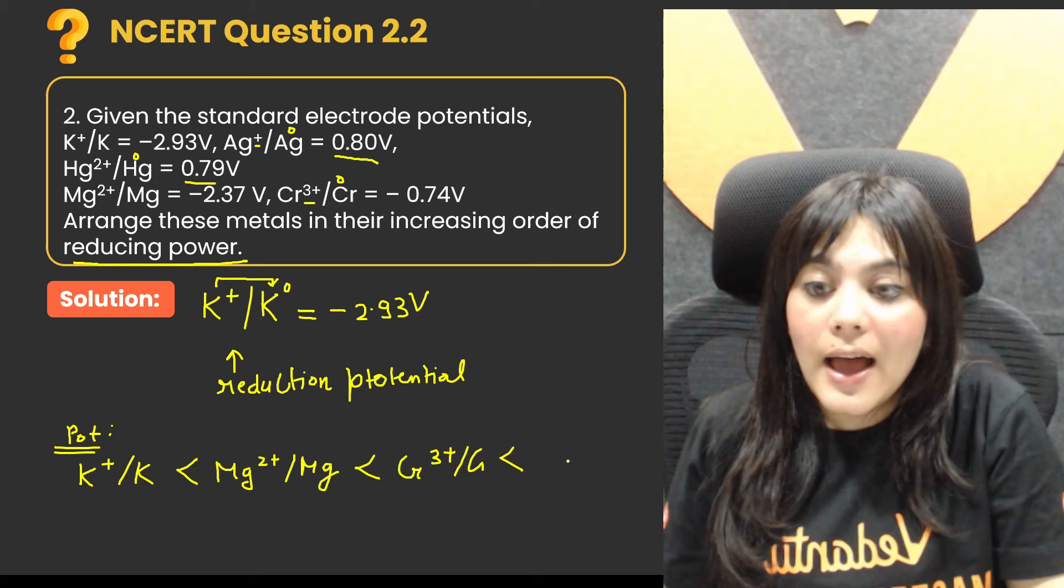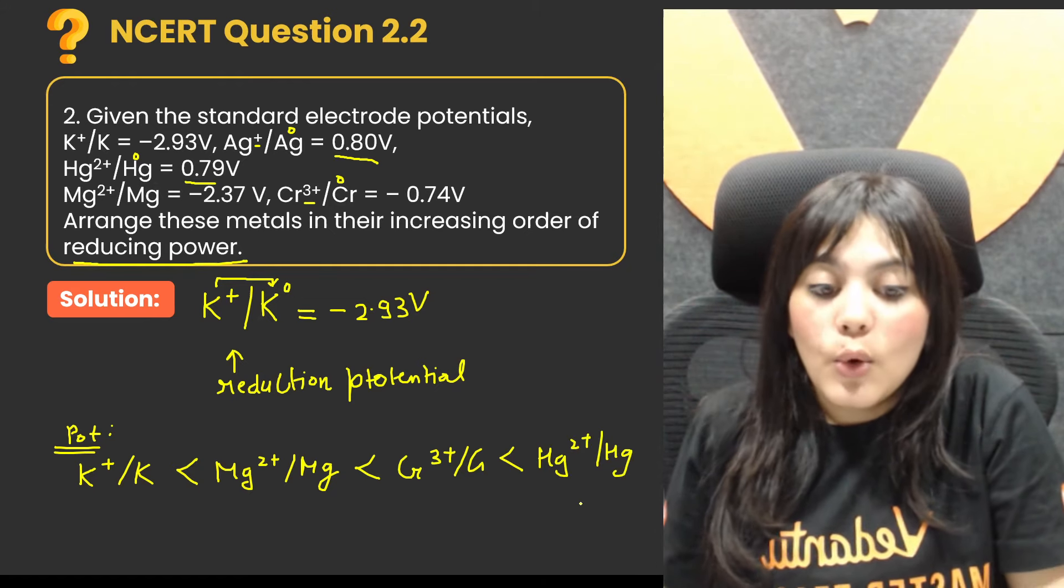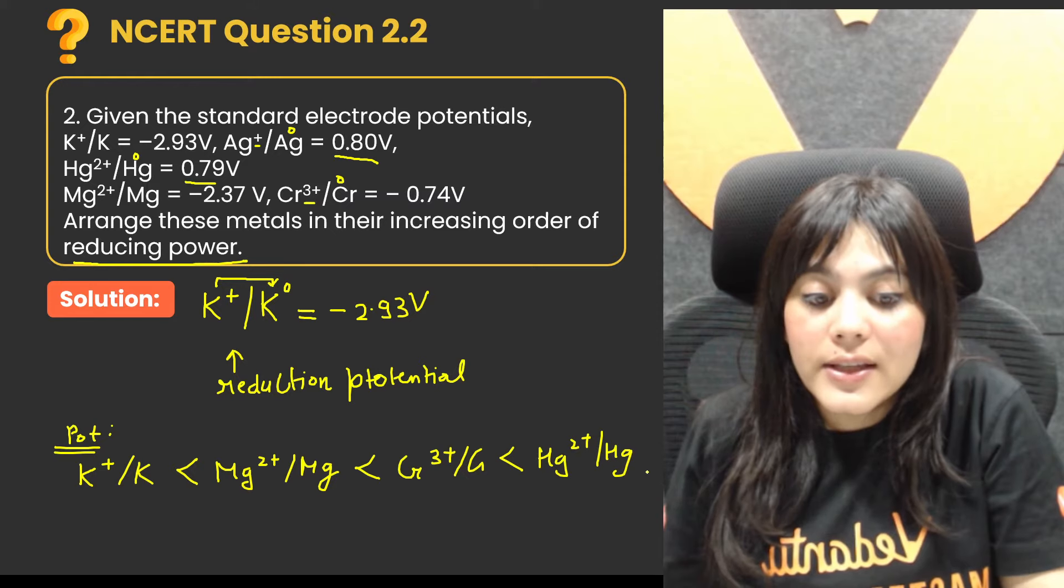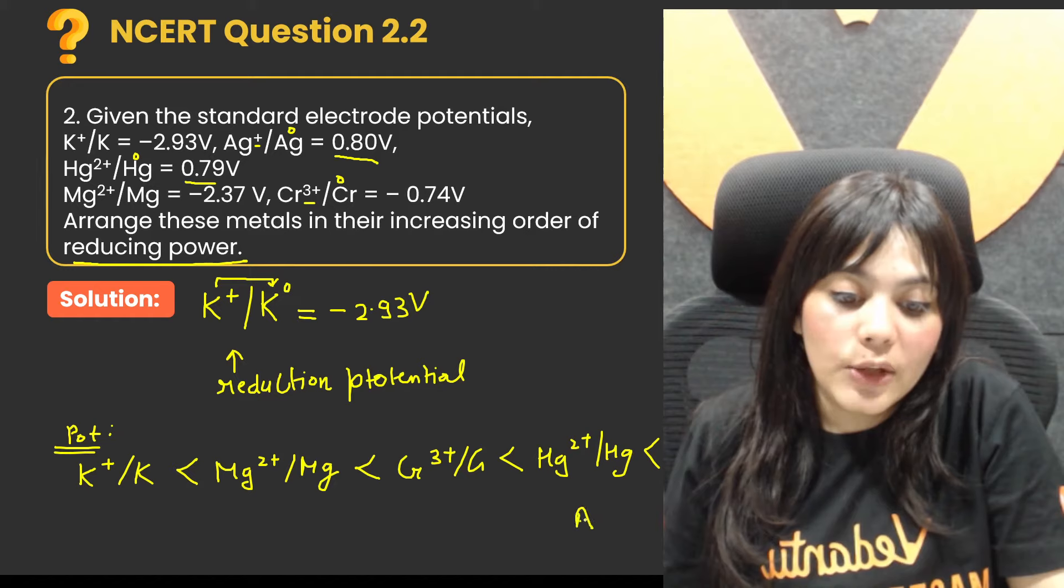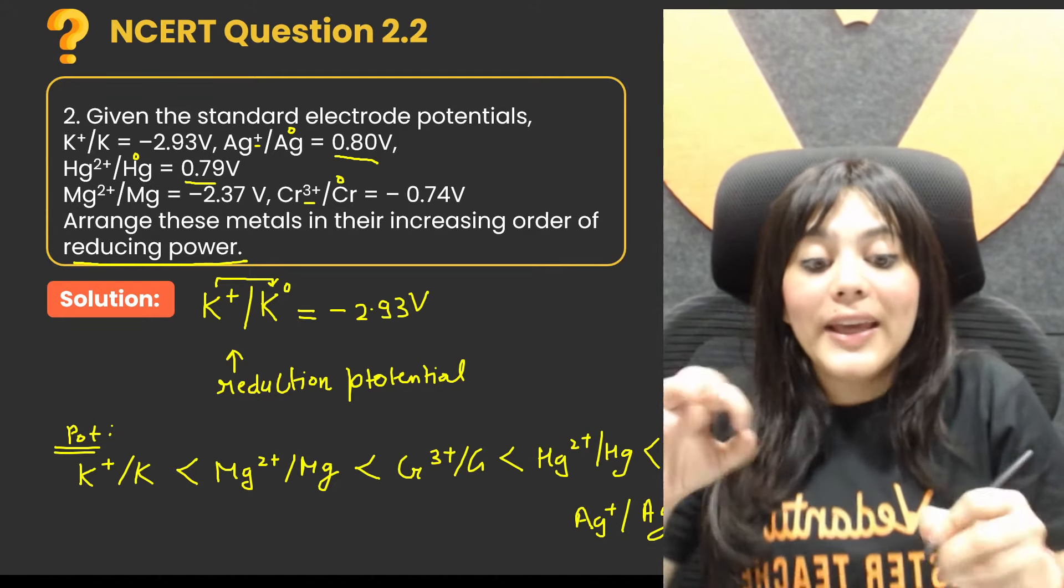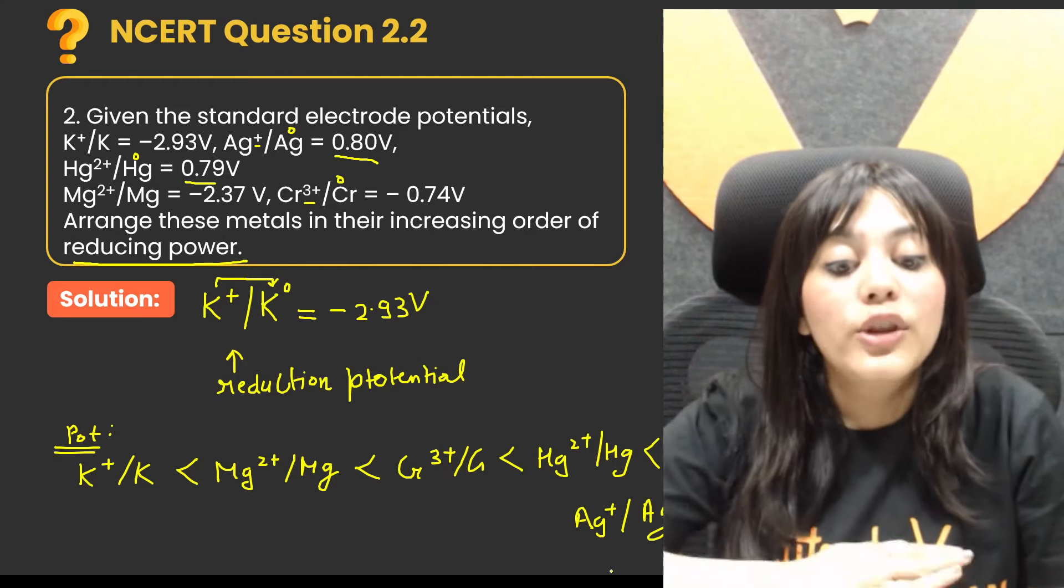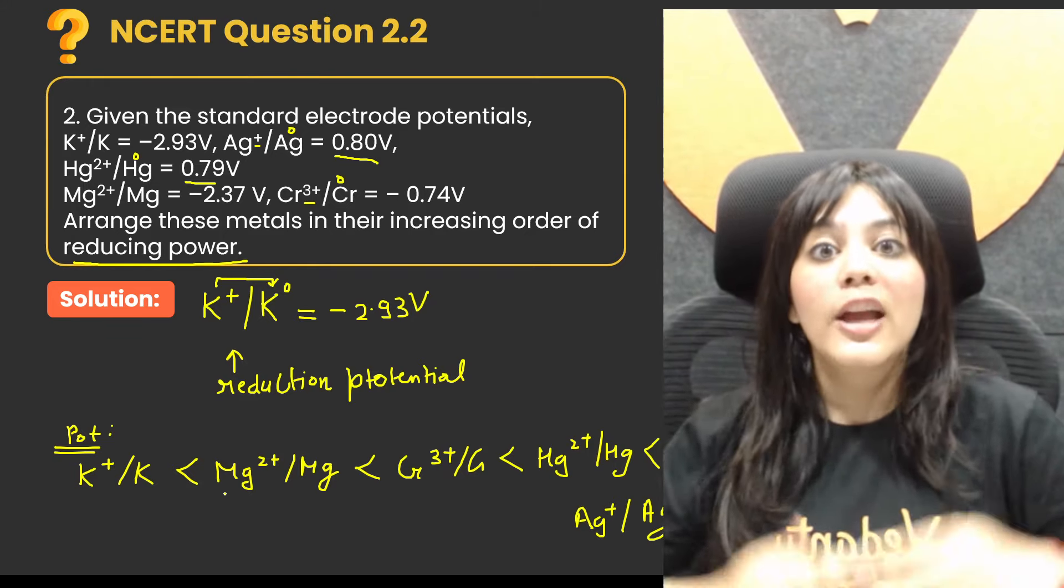More reduction potential than Hg is your Ag+. Here is your Ag+/Ag reduction potential. So this is the order, going positive. What did I say? The lower the reduction potential, the higher its reducing power.